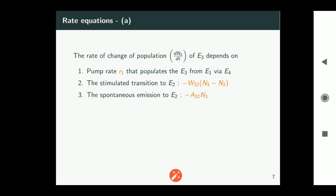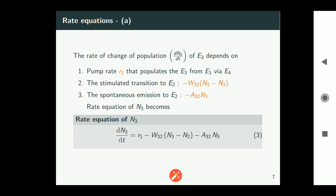Then in addition to that there is spontaneous emission from e3 to e2. That decreases the population of n3. Therefore it carries negative sign and its value is minus a32*n3. With all these, rate equation of n3 can be written as dn3/dt which is equal to r1 minus w32*(n3 minus n2) minus a32*n3. Note down this equation 3 that we will use later.